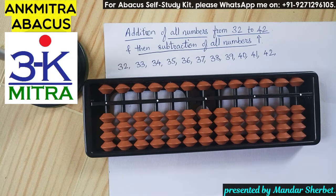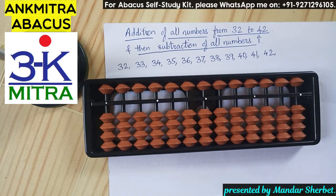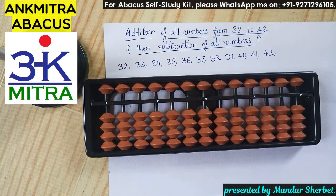This video will be focusing on doing addition of all numbers from 32 to 42 — that is 32, 33, 34, 35, and so on up to 42. We will first add all these numbers, and then whatever answer we get, we will start subtracting all these numbers starting from 32 — so minus 32, minus 33, minus 34, and so on up to 42.